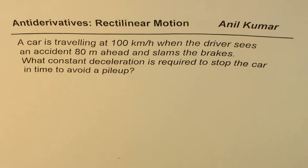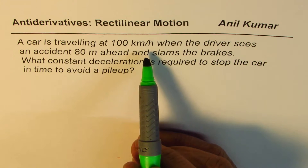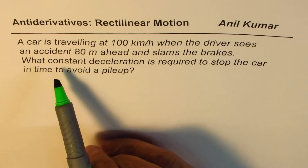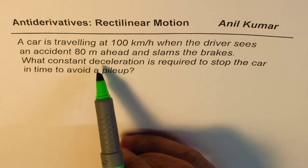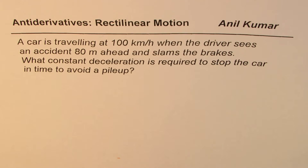I'm Anil Kumar sharing with you an excellent question on anti-derivatives. We'll discuss rectilinear motion in this particular example. A car is traveling at 100 kilometers per hour when the driver sees an accident 80 meters ahead and slams the brakes. What constant deceleration is required to stop the car in time to avoid a pile up? You can pause the video, answer the question, and then look into my suggestions.